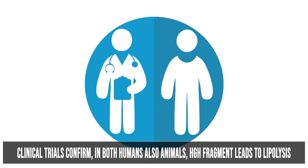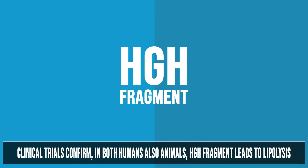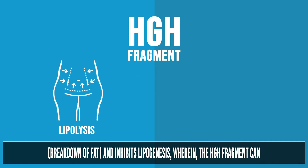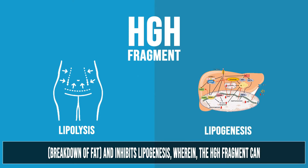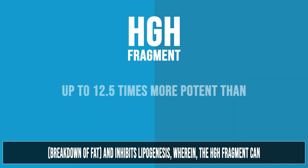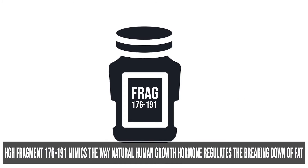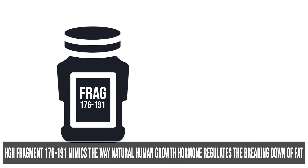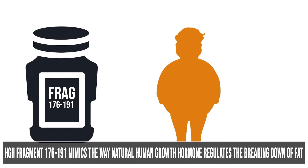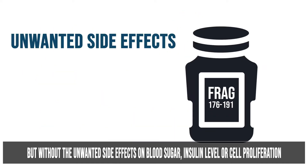Clinical trials confirm in both humans and animals that HGH fragment leads to lipolysis — the breakdown of fat — and inhibits lipogenesis. The HGH fragment can be up to 12.5 times more potent than HGH for fat burning. HGH Fragment 176-191 mimics the way natural human growth hormone regulates the breakdown of fat, but without the unwanted side effects on blood sugar or insulin levels.